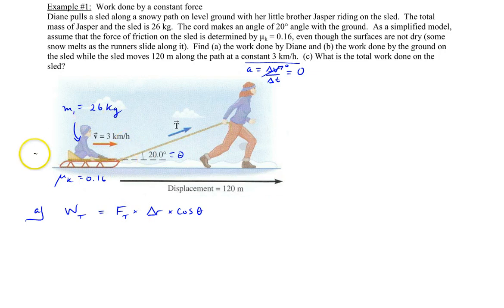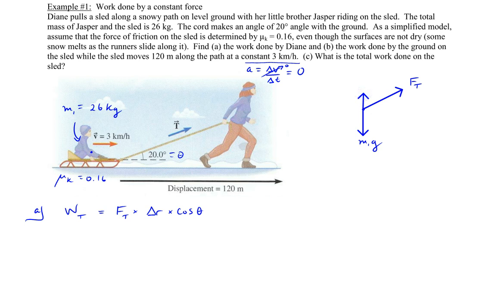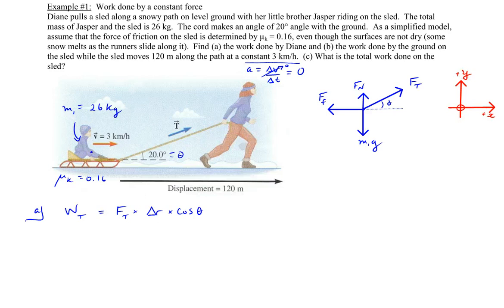Let's draw a free body diagram for Jasper and the sled together as one unit — just a single point representing both. We have a force of tension going off at an angle, a force of gravity going downward, a normal force going upward, and the friction force parallel to the surface and opposite to the direction of sliding. The angle given is 20 degrees. We'll choose a coordinate system with axes going straight up and to the right.